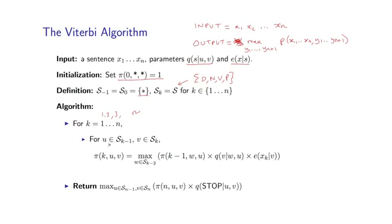For any position k we consider all possible tag pairs u and v possible at positions k minus 1 and k. And we simply compute pi k u v using this max over w's at sk minus 2. Recall this is the set of tags, possible tags at position k minus 2. Then I have this pi value times the q value times this e value.